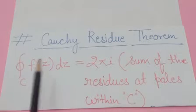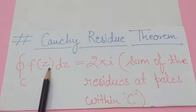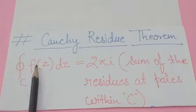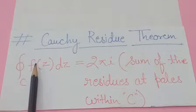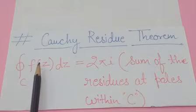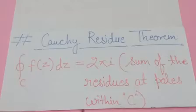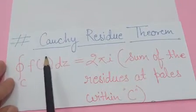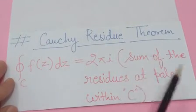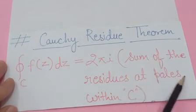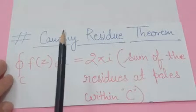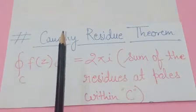After taking the sum of all residues, multiply that sum with 2πi. With all these steps, you can easily find the integration of the given function within the closed curve C. For this entire process, you need to know how to find poles for any given function.